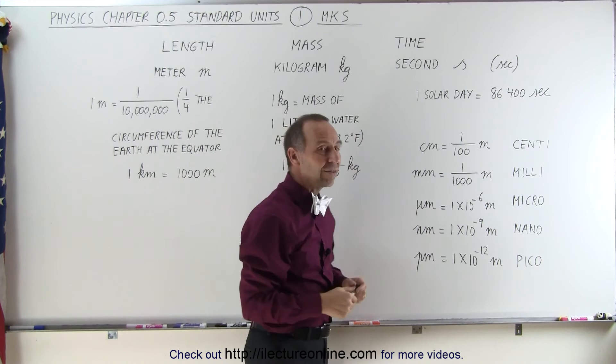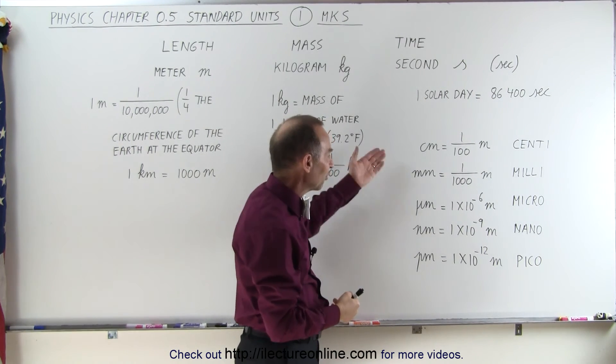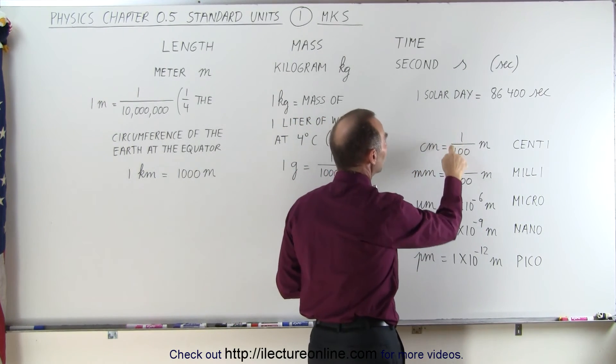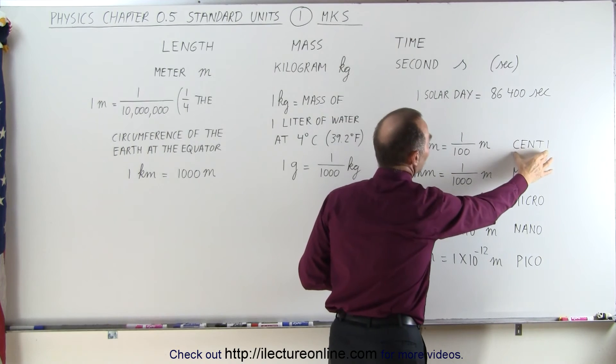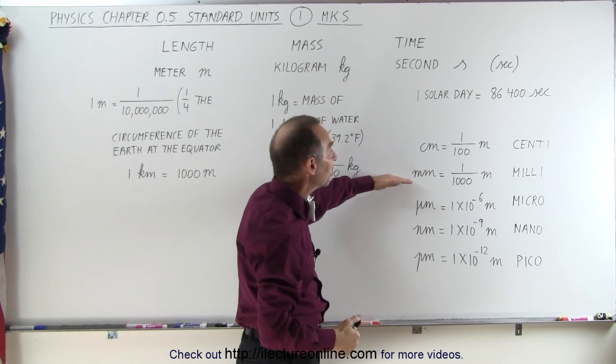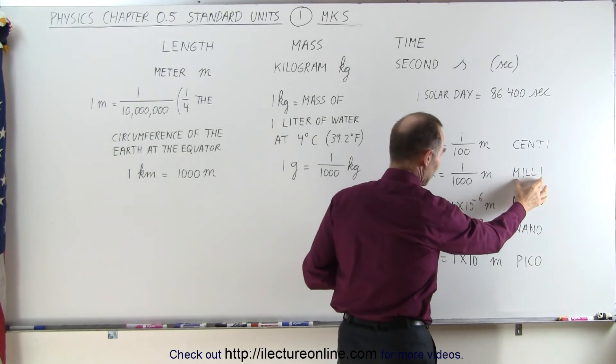Now, also, we have some prefixes that we use in various measures, especially for length, and here we have some examples. A centimeter is one one hundredth of a meter, because it has the prefix centi, which means one one hundred. Millimeters is one one thousandth of a meter, so it uses the prefix milli.